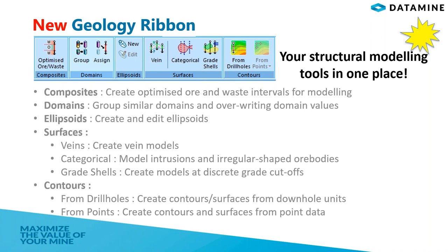Looking at the new geology ribbon, the tools related to modeling are located under the same menu. In the compositing part, we can create optimized ore/waste intervals. In the ellipsoid panel, usable ellipsoids can be displayed on the 3D screen, and the size and orientation of ellipsoids can be modified. The tools within the surface implicit modeling window will be examined practically in this webinar. Contouring tools are also located under the geology menu now, though contouring is out of the scope of this webinar. The geology menu will keep developing and there will be more useful tools in upcoming versions.